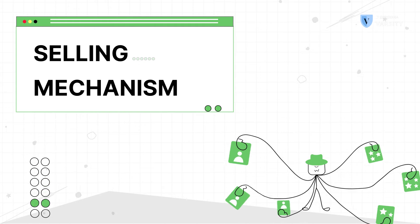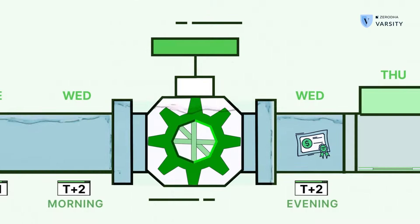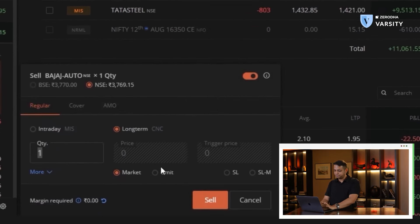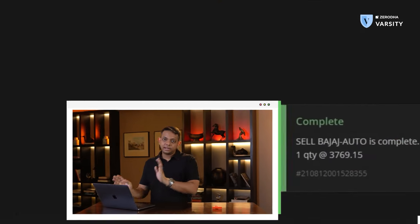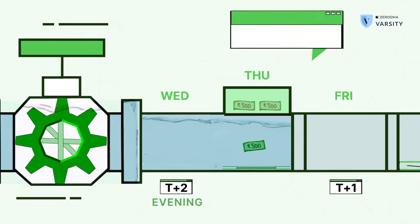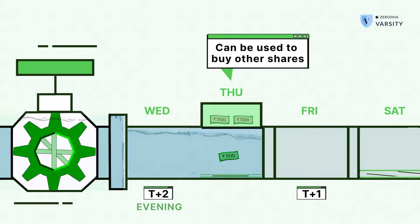Now let's actually sell the shares and understand how that settlement works. We've seen the settlement from Monday through Wednesday. If we want to sell Bajaj Auto on Thursday, that becomes the new T day. As soon as we do the sell transaction — I'm placing the sell order now — the sell order has been done. What happens immediately is that 80% of the worth of the sale is credited to my account. We can use this money to buy other shares, but we can't withdraw it as cash yet because settlement hasn't happened. Also, the shares are debited from my account immediately.